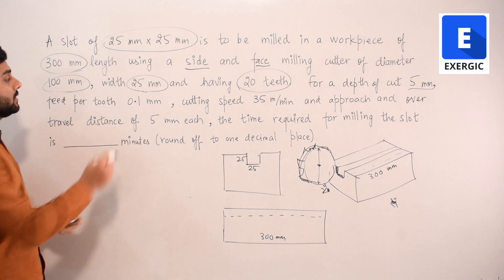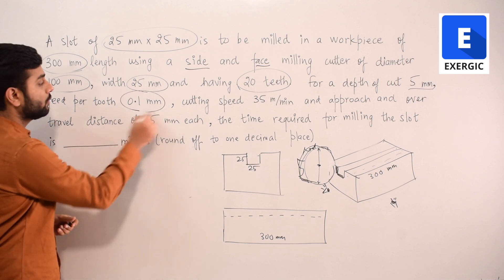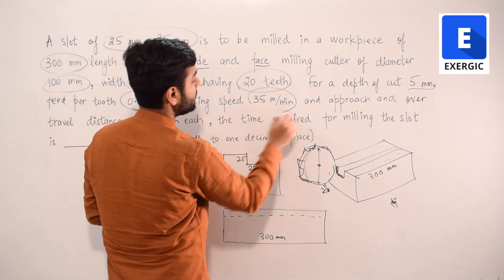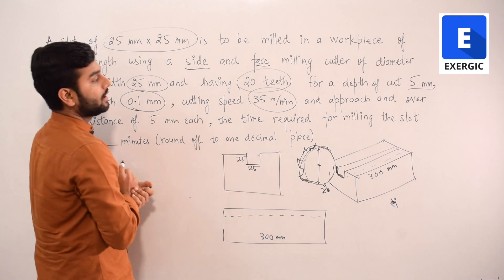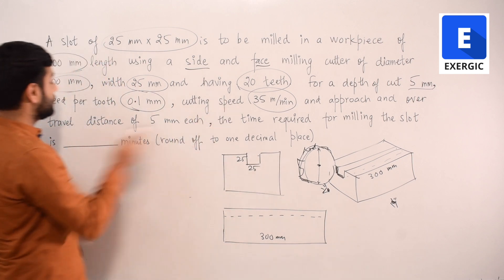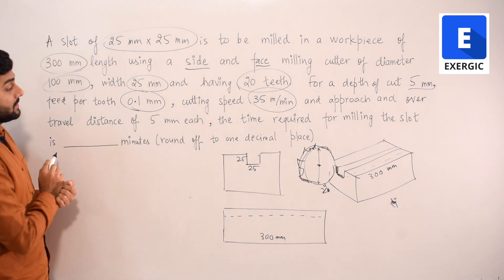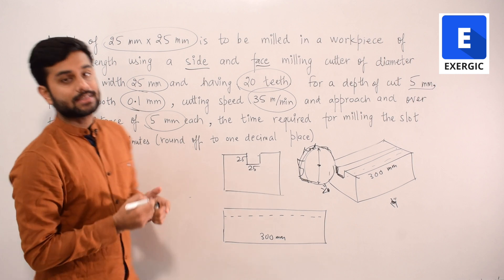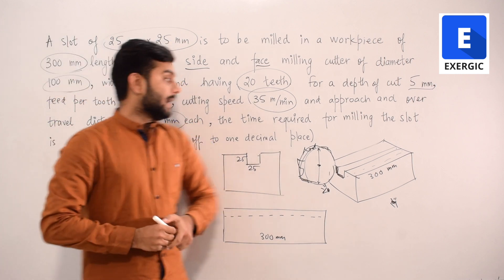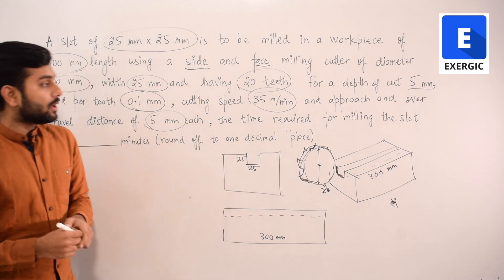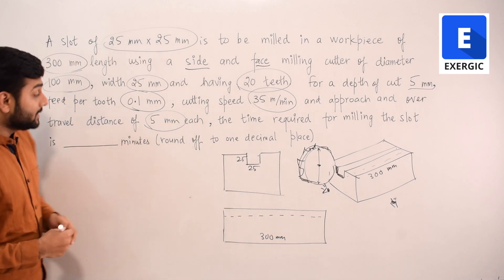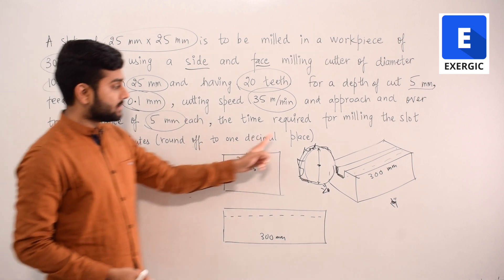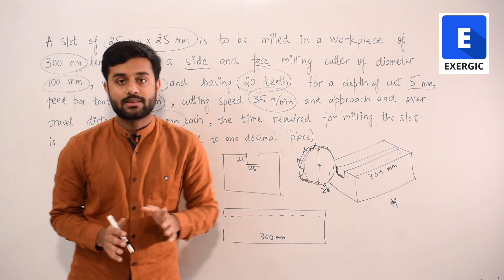The feed per tooth is 0.1 mm, cutting speed is 35 meters per minute, and approach and over travel distance are given as 5 mm each. The question asks for the time required for milling this slot in minutes, rounded off to one decimal place.